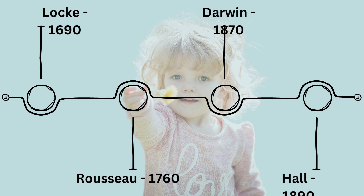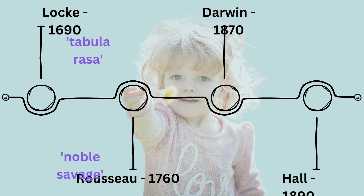John Locke in the 1690s proposed the concept of tabula rasa, suggesting that parents can mould a child's development as they see fit. Jean-Jacques Rousseau in the 1760s advocated for the idea of the noble savage, believing that children are born innocent but are corrupted by society.